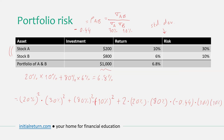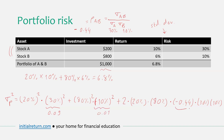This expression gives us the variance of portfolio returns. If I take the square root, that gives portfolio risk. Numerically, 30% squared is 0.09, 10% squared is 0.01, and the covariance term works out to approximately −0.0132.